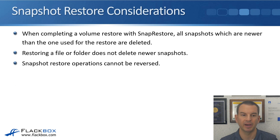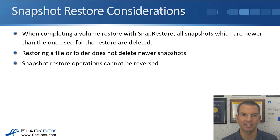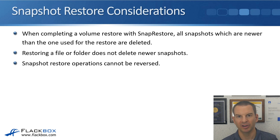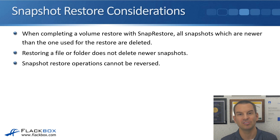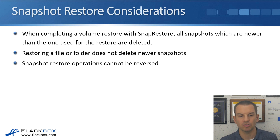Some final considerations about snapshot restore operations. When completing a volume restore with SnapRestore, all snapshots newer than the one used for the restore are deleted. Be careful and make sure you're restoring from the correct snapshot. If you're not sure, start with the newer one and work your way back — don't go with the older one first because once you've done that, you've lost all the newer snapshots. Restoring a file or folder, however, does not delete newer snapshots. Also, SnapRestore operations cannot be reversed — once done, there's no option to roll back.